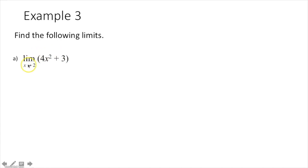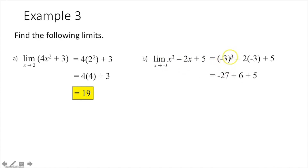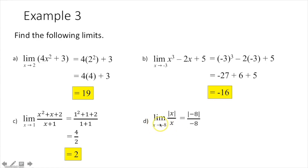Example 3: find the following limits. The limit as x approaches 2 of 4x² + 3: plug in 2 — 2 squared is 4, times 4 is 16, plus 3 gives 19. The limit as x approaches negative 3 of x³ − 2x + 5: plug in negative 3 — negative 3 cubed is negative 27, negative 2 times negative 3 is positive 6, sum gives negative 16. Part c: the limit as x approaches 1 of a rational function — plug in 1 for each x and simplify, getting 2. Part d: the limit as x approaches negative 8 of |x|/x — plug in negative 8, get 8 over negative 8, which is negative 1.